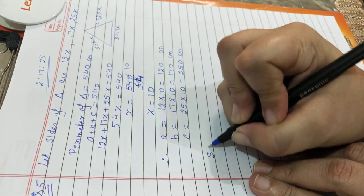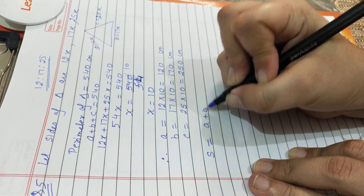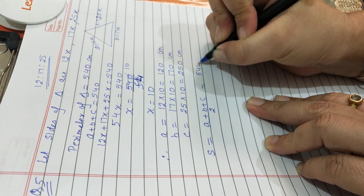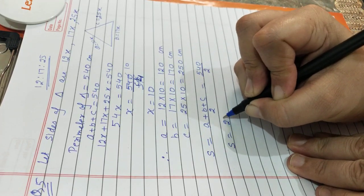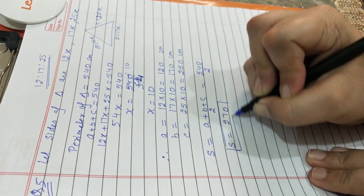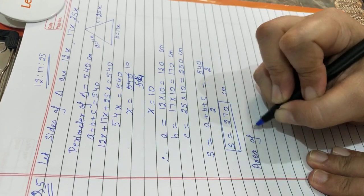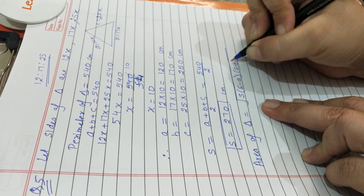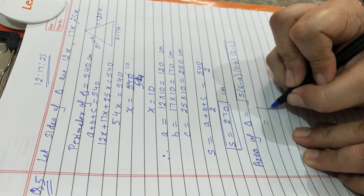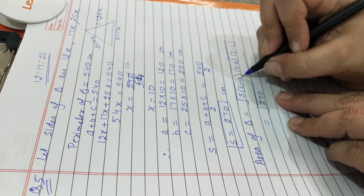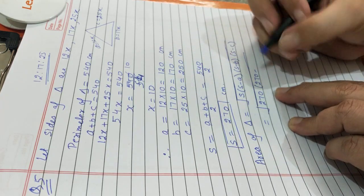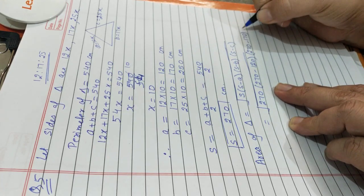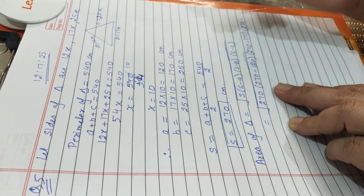The first step to find the area is to find the semi-perimeter. S = (A + B + C) / 2 = 540 / 2 = 270 cm. Now, area of the triangle by Heron's formula: area = √(S × (S−A) × (S−B) × (S−C)). Substituting the values: S = 270, S − A = 270 − 120 = 150, S − B = 270 − 170 = 100, S − C = 270 − 250 = 20.